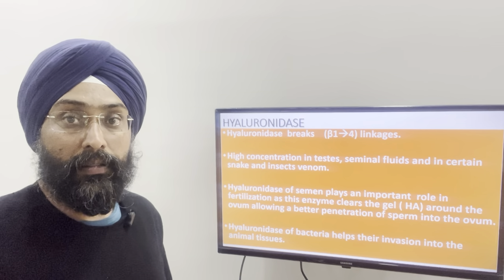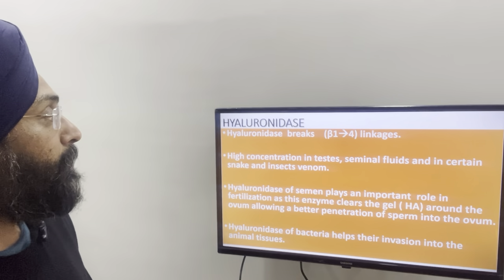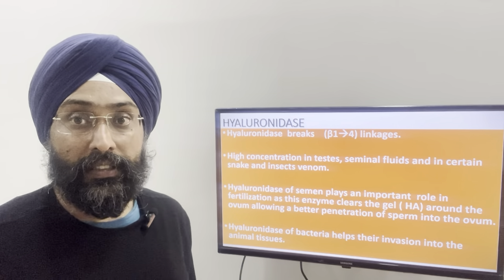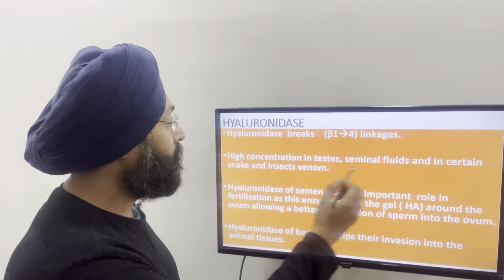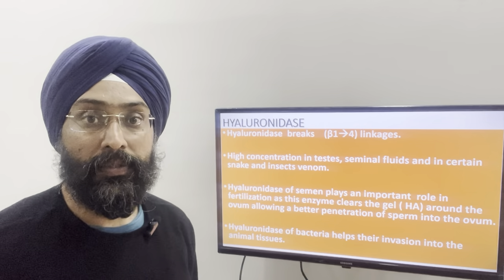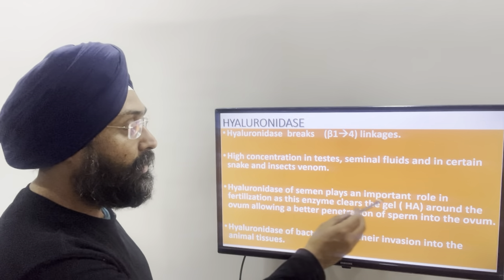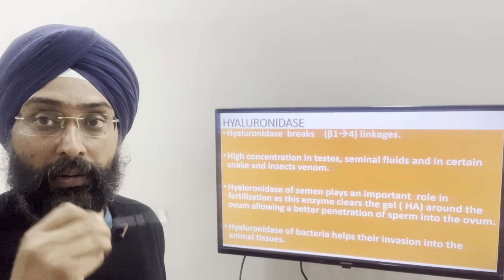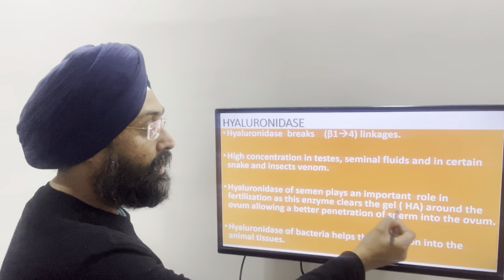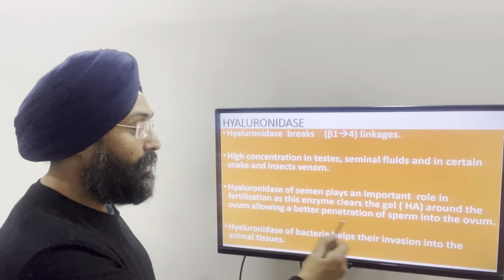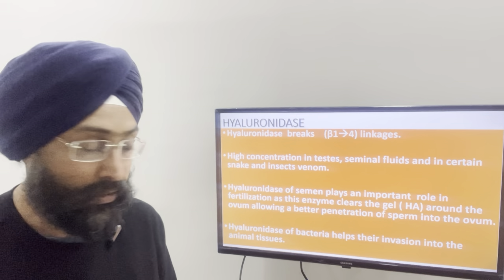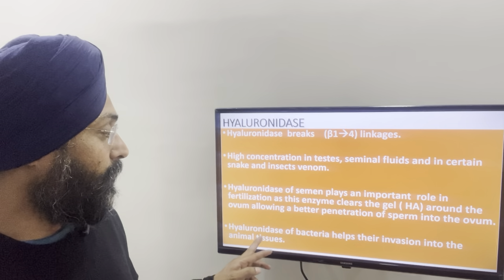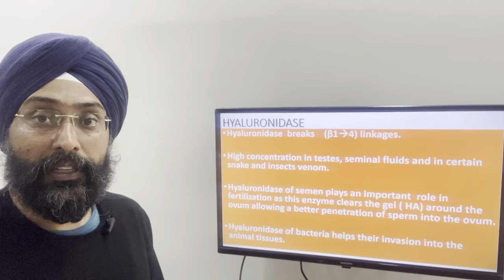Now coming on to hyaluronidase — it is an enzyme that breaks beta-1,4 linkages. Its concentration is found in high concentration in testis, corpus luteum, and insect venoms. The hyaluronidase of semen plays an important role in fertilization because the enzyme clears the gel around the ovum that contains hyaluronic acid. So hyaluronidase breaks down hyaluronic acid around the ovum for better penetration of sperm into the ovum. Also, hyaluronidase of bacteria helps in invasion into animal tissue.